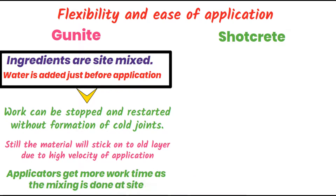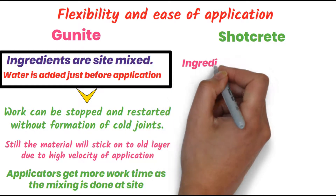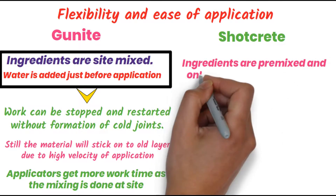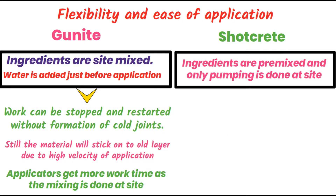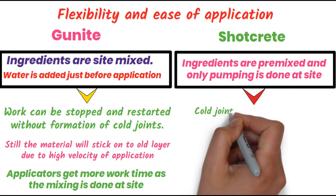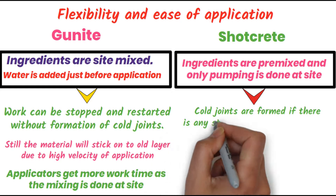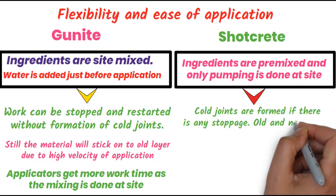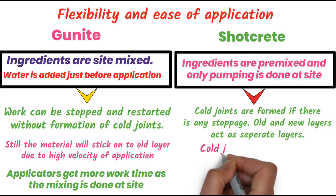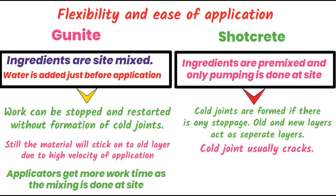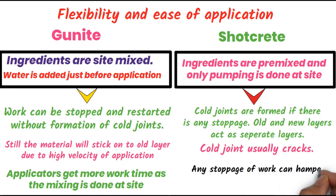But in the case of shotcrete, the ingredients are premixed and only pumping is done at the site. Cold joints are formed if there is any stoppage in the application process. Old and new layers act as separate layers, and the cold joints usually lead to cracks. Any stoppage of work can hamper the quality and strength of concrete in the case of shotcrete.